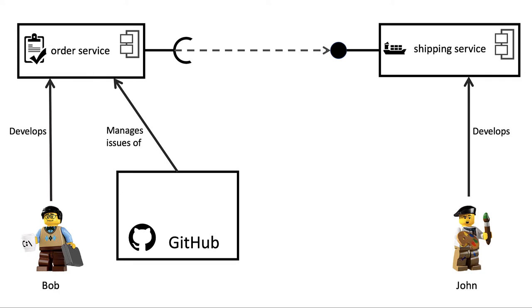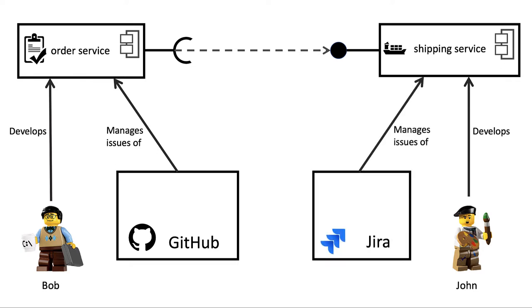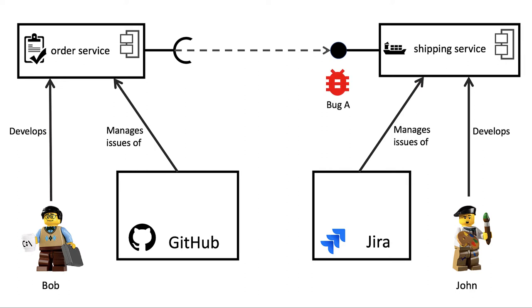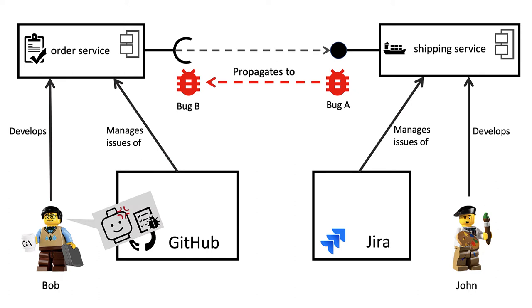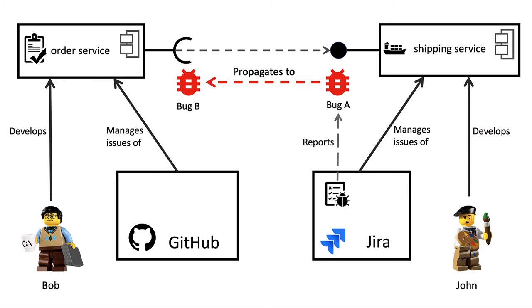Therefore, the order service's issues are managed in a GitHub repository, while John manages the shipping service's issues in a Jira project. One day, John gets a brilliant idea to write some source code for the shipping service's interface. However, his implementation is a bit buggy. Since the order service invokes this interface's functionality, the bug propagates to the order service. Bob is annoyed about this new bug in his service and looks for the origin of it. He finds out that a bug is dependent on the other bug of the shipping service's interface and finds a bug report for it.